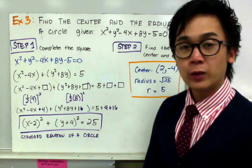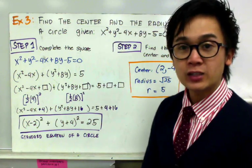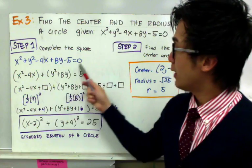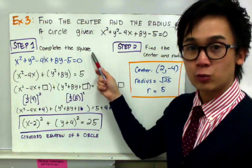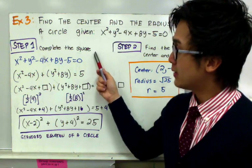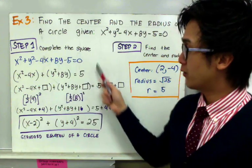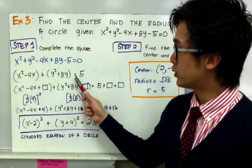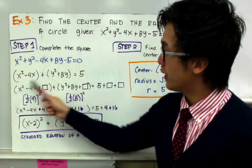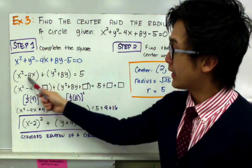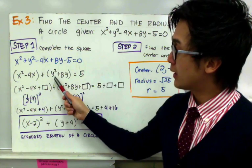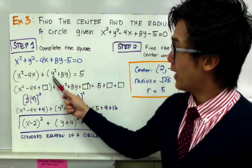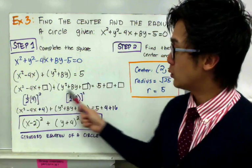For example number 3, we are given the general equation of the circle and asked to find its center and radius using the completing the square method. The first step is to group x's and y's together and move the constant to the other side: x² − 4x + y² + 8y = 5. Check for leading coefficients — both x² and y² have leading coefficients of 1, so we are ready to complete the square.